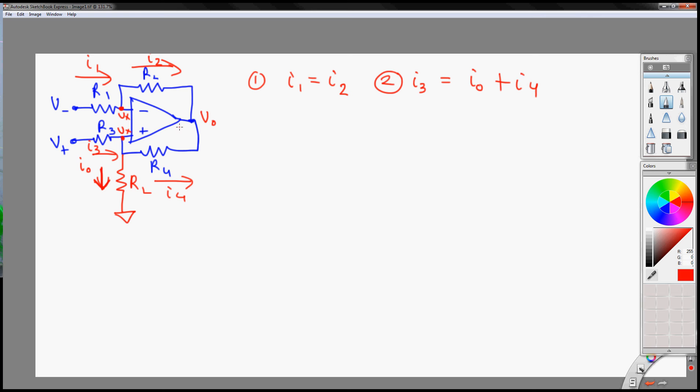Now we can rewrite this in terms of voltages. So you have V minus minus Vx over R1, so you go to Vx minus Vout over R2. And then for I3 you have V plus minus Vx over R3, equal to I0 plus Vx minus V0 over R4.